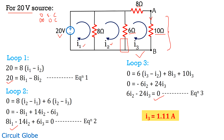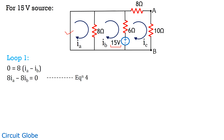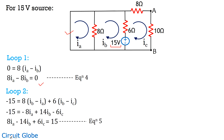Moving further, let's now consider the 15-volt source. The 20-volt source is replaced by its internal resistance — that is, that branch is short-circuited — and the 15-volt source is now active. Applying KVL in all three loops: for loop 1, we get 8·IA − 8·IB = 0.